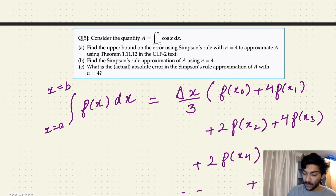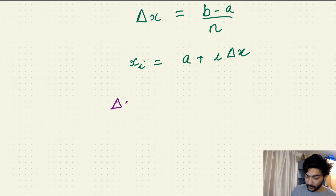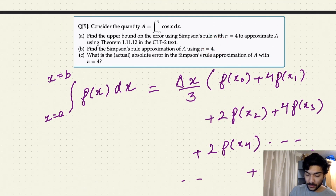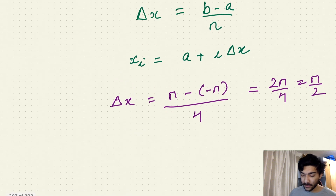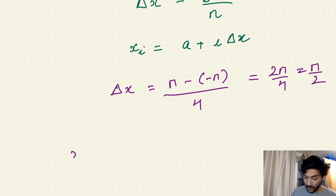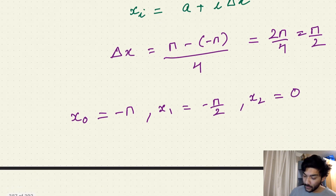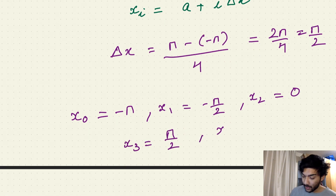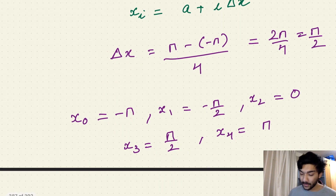In this question, our lower endpoint is minus π and the upper endpoint is π, so delta x is π minus (minus π) over n equals 4, which simplifies to 2π over 4, giving us π over 2. Now calculating the x_i values: x₀ = -π, x₁ = -π/2, x₂ = 0, x₃ = π/2, and x₄ = π. So you start from the lower endpoint and increment by delta x all the way to the upper endpoint.